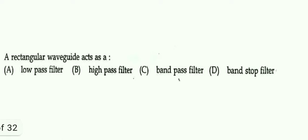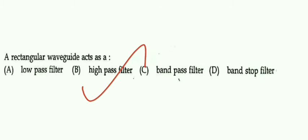Next: a rectangular waveguide acts as a high pass filter because it is used to pass frequencies above some frequency range. Whereas, a transmission line is a low pass filter — it passes low frequencies up to some limit, and beyond that it cannot pass. Waveguide passes the frequency range above some cutoff frequency, so it is a high pass filter. Transmission line acts as a low pass filter.